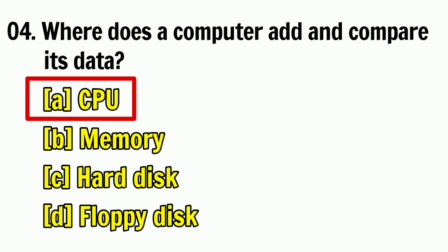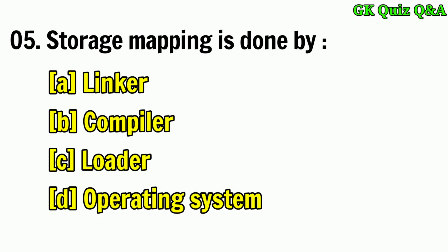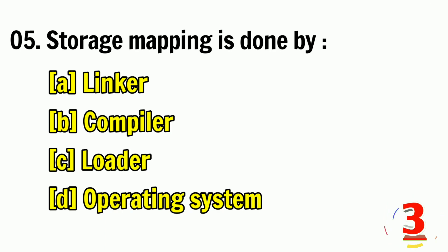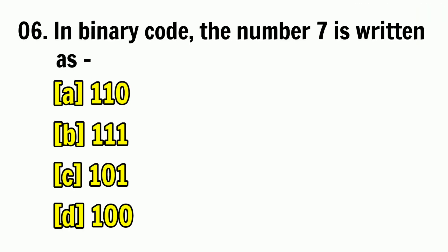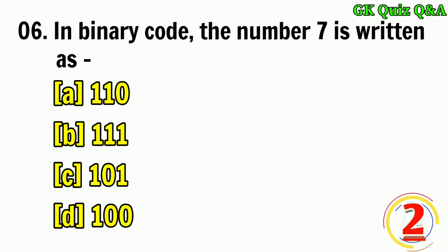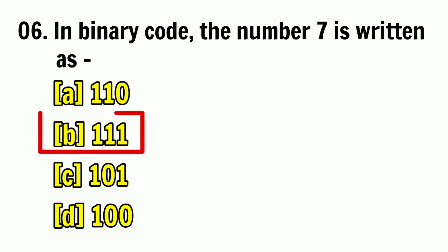Answer A: CPU. Storage mapping is done by — Answer B: Compiler. In binary code, the number 7 is written as — Answer B: 111.